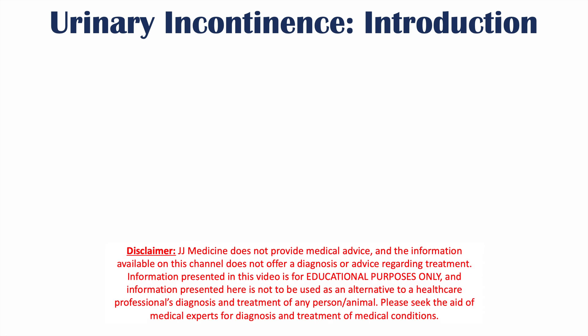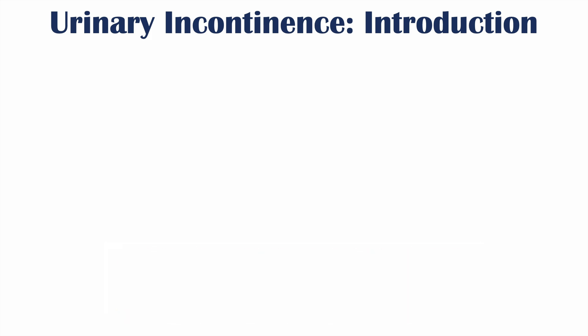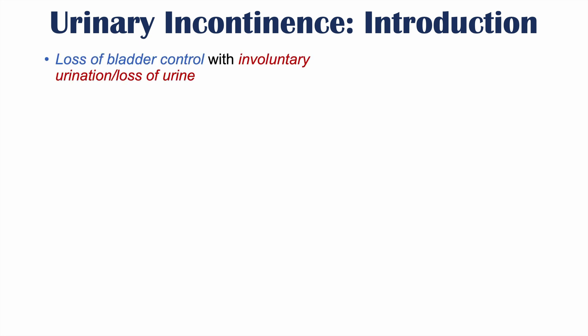Hi everyone. We're talking about urinary incontinence in this lesson. We're going to talk about the different types of urinary incontinence, the symptoms of each type, how they're diagnosed, and how they're treated. Urinary incontinence is a loss of bladder control with involuntary urination or loss of urine.